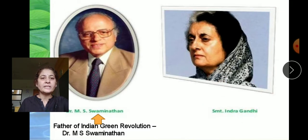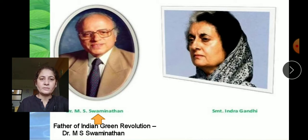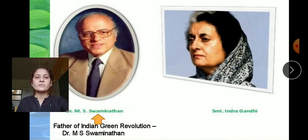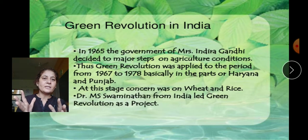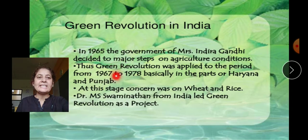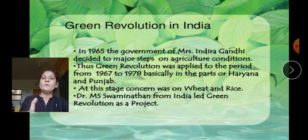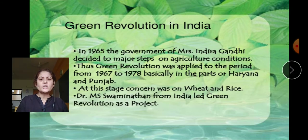At the time of our ex-Prime Minister Srimati Indira Gandhi, she took care of food production. In 1965, Indira Gandhi decided to take major steps for agriculture. From 1967 to 1978, especially in Haryana and Punjab, many changes were made particularly for wheat and rice production.